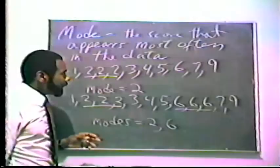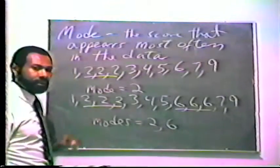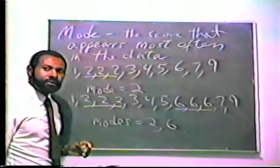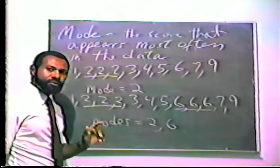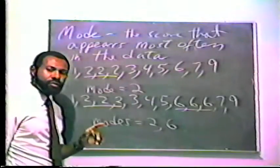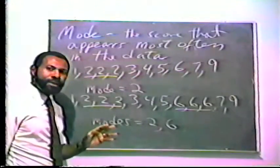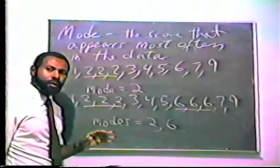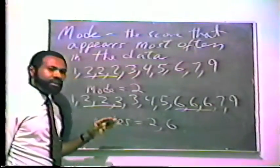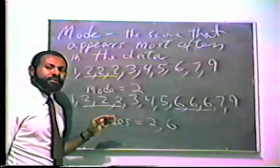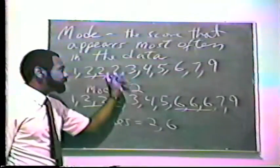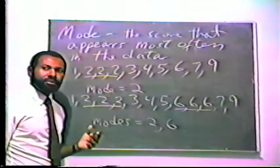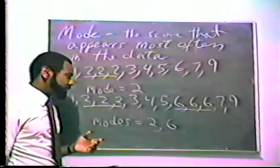Another shortcoming of using the mode — and the median also — is that when you talk about that measure of central tendency or that average, you're only taking into consideration one number: the number that is the mode, or the number that is the median. We're not even considering all those other numbers.